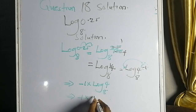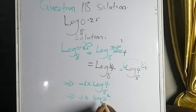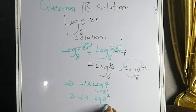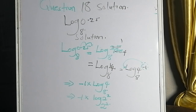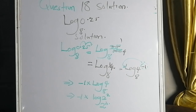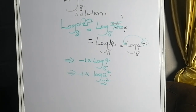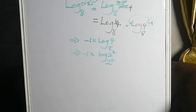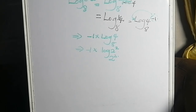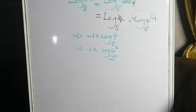We can simplify further: 4 is 2 raised to power 2, and 8 is 2 times 2 times 2, which is 2 raised to power 3. So 2 times 2 gives 4, and 4 times 2 gives 8 — that's 2 raised to power 3.